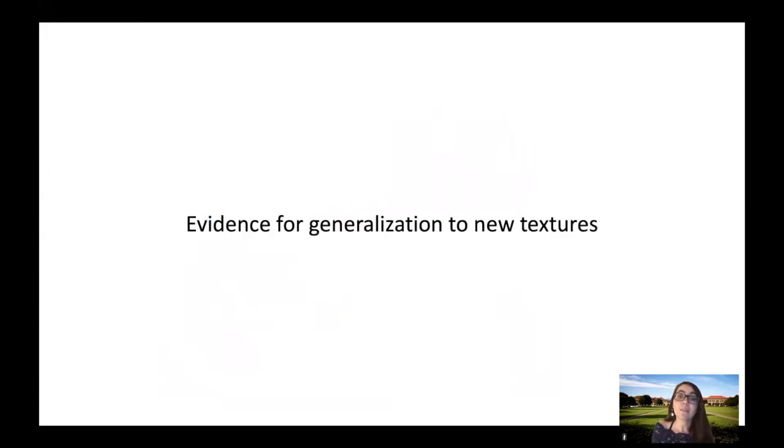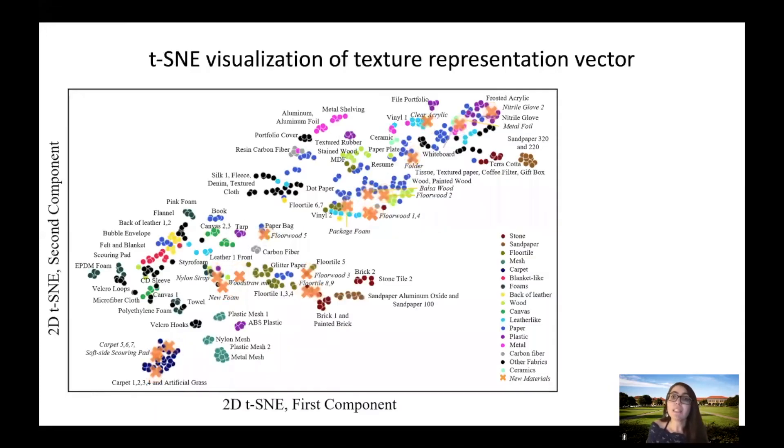We also provide preliminary evidence regarding our model's capability for generalizing to materials not in its training set. We do this by looking at the placement of the latent representation of these materials in the t-SNE space. The orange crosses in this figure represent 20 new materials. For example, materials with carpet-like textures were placed near other carpets. The new floor tiles were placed close to other floor tiles as well. It is important to note, however, that our method had difficulty generalizing for materials with significantly different textures than those in the dataset, such as a weirdly textured foam.